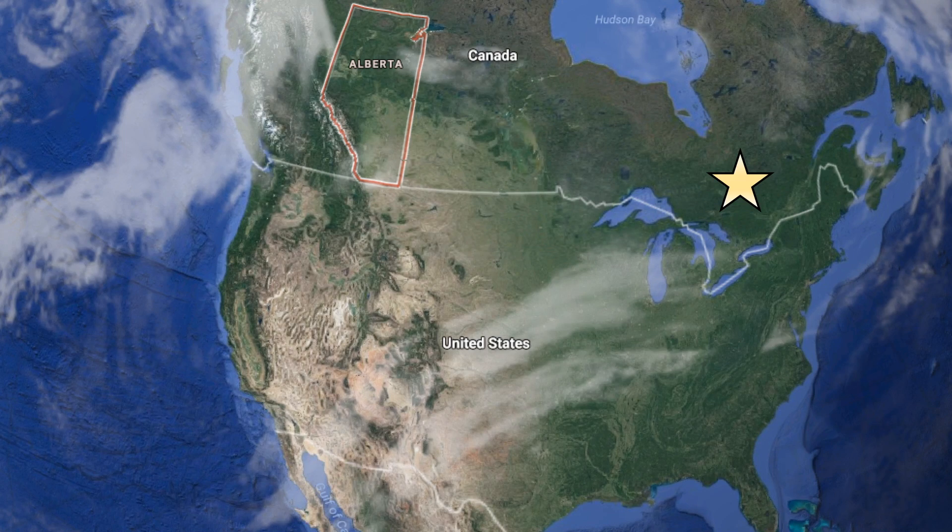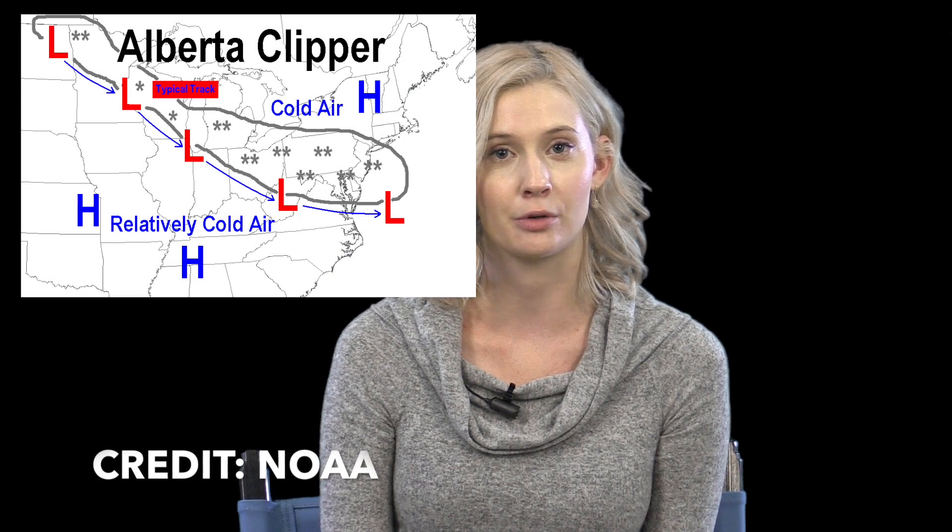An Alberta Clipper is also a stand-alone winter storm that's a low-pressure system originating from — you guessed it — Alberta, Canada. The only difference is that this low tracks southeast so quickly it can't gather the large moisture required for heavier snow from the Gulf or the Atlantic Ocean. So snow is generally light, but temperatures still drop below normal and strong winds move in as well.